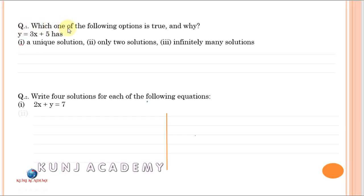Question: which one of the following options is true and why? The given equation is y is equal to 3x plus 5. Number 1: a unique solution. Number 2: only 2 solutions. Number 3: infinitely many solutions.